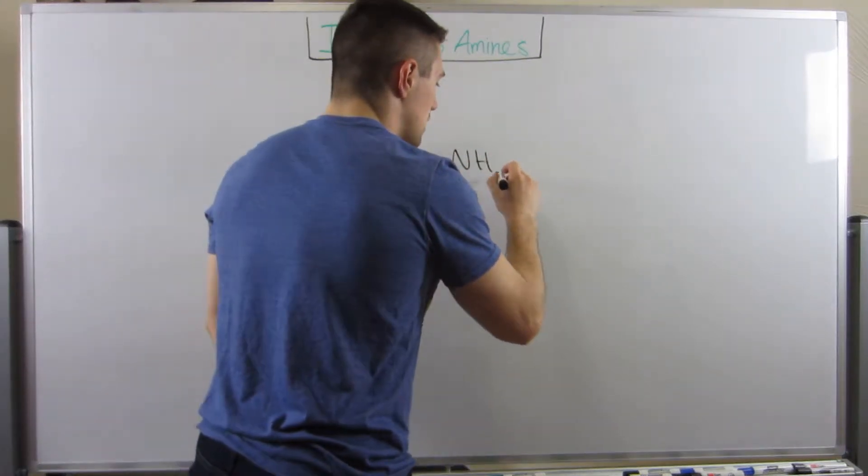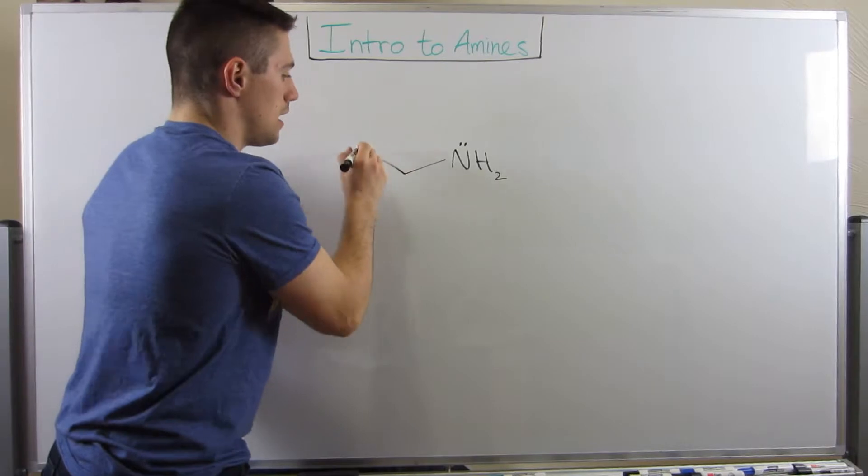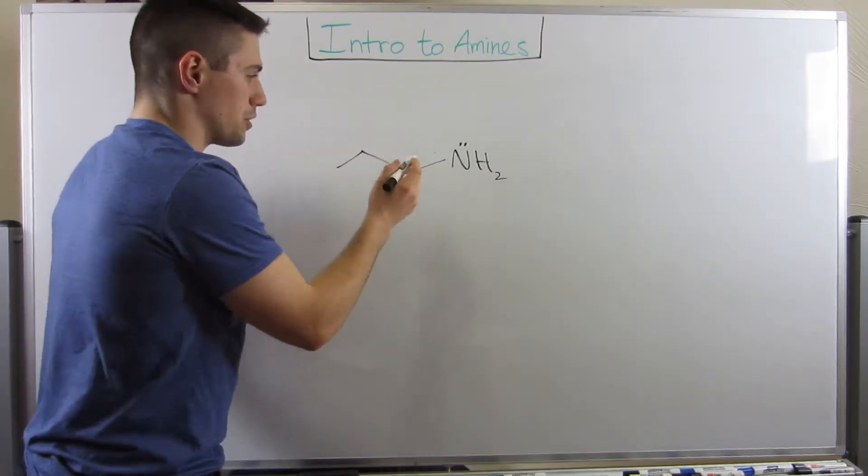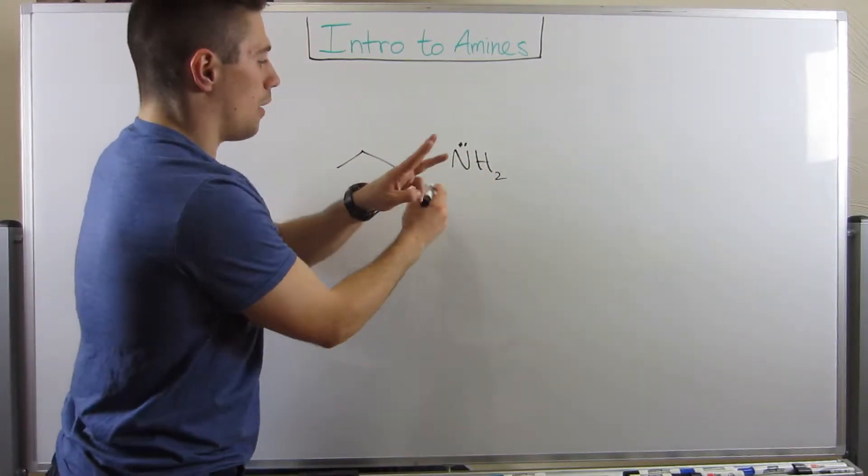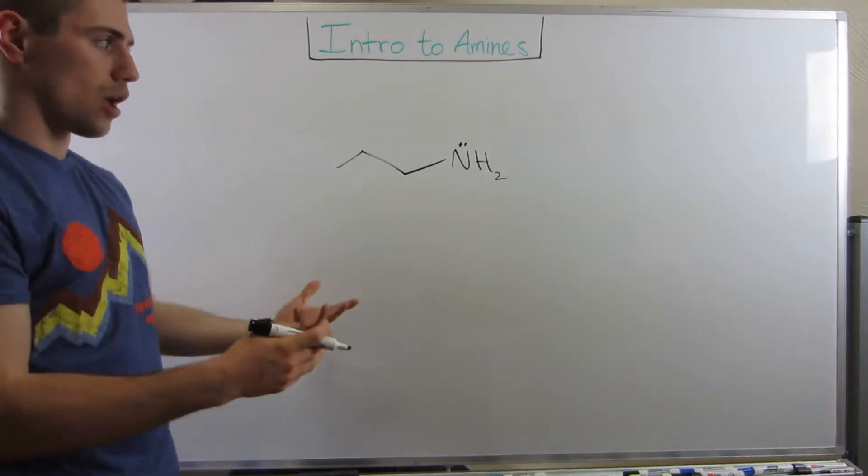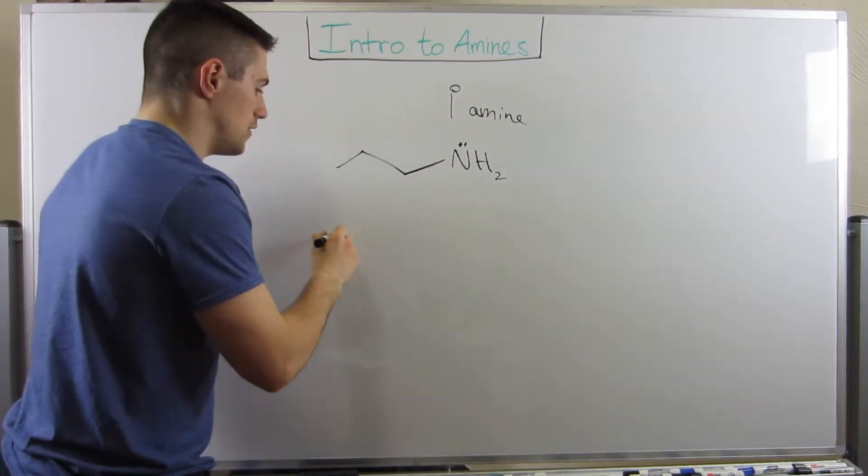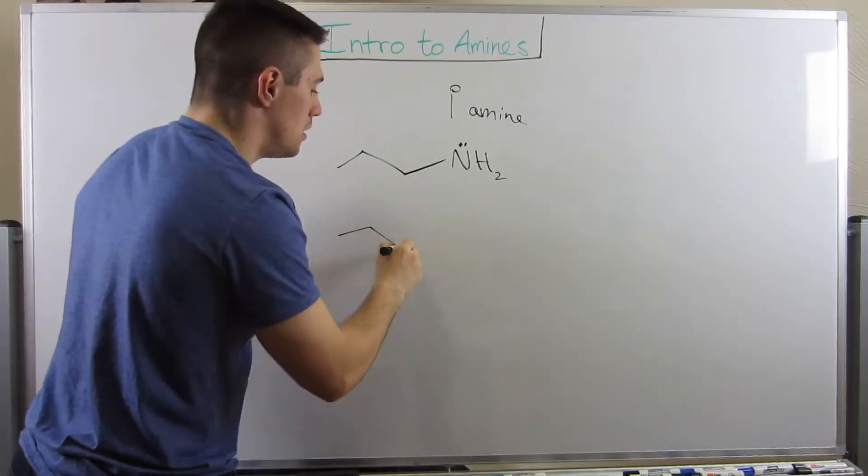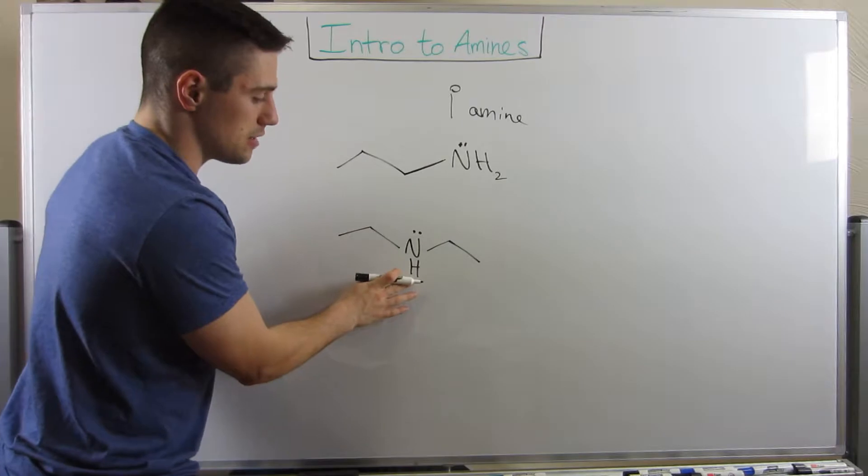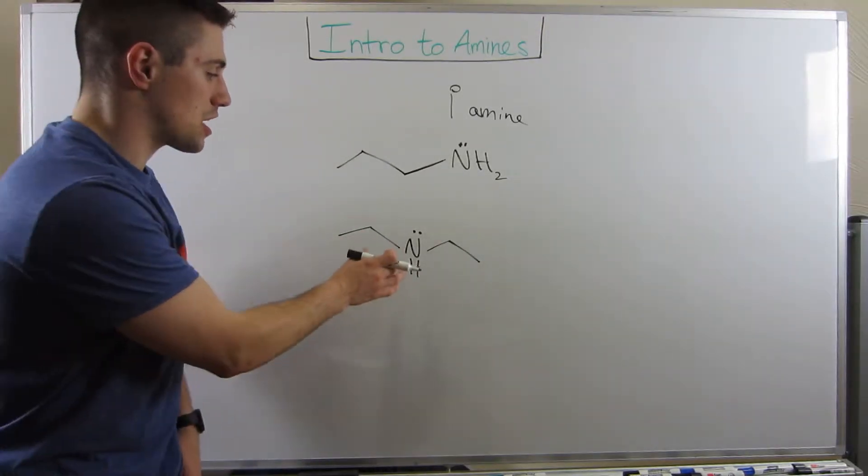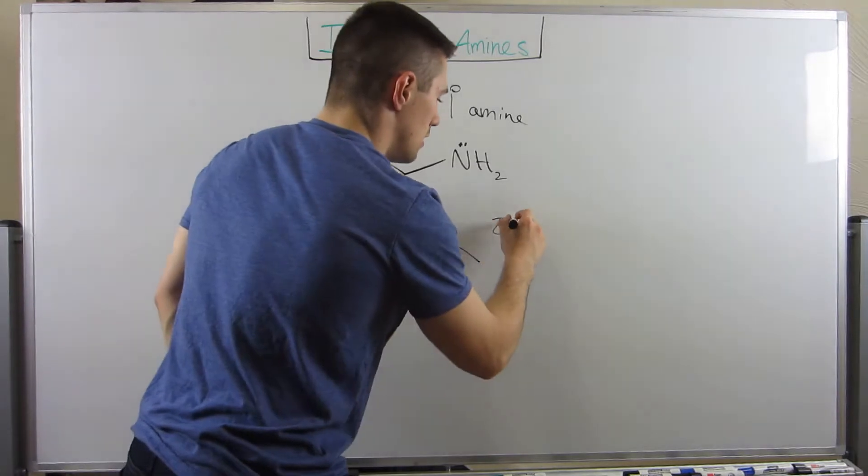Just to review some functional group notation, amines can exist in a variety of ways. If I draw a 1, 2, 3 carbon chain with an NH2 on the end and a lone pair, nitrogen has two bonds to hydrogen, a bond here - three bonds total - and then the lone pair, so he's got a full octet. This would be a primary amine.